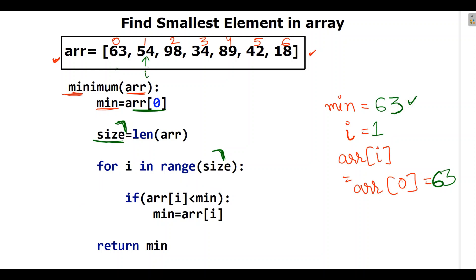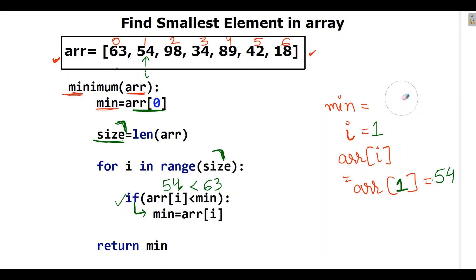Now i points to index 1, where the value is 54. We check: is 54 smaller than 63 (the current min)? Yes — this satisfies the if condition, so 54 is assigned to the min variable, replacing 63.